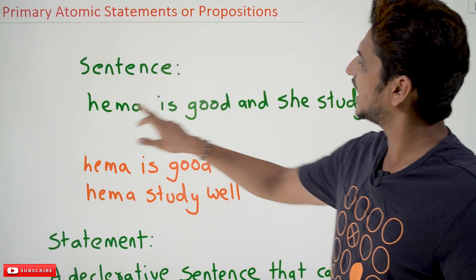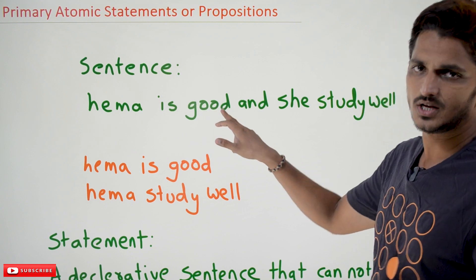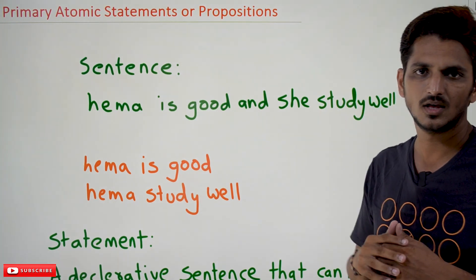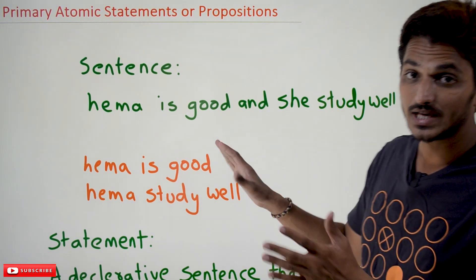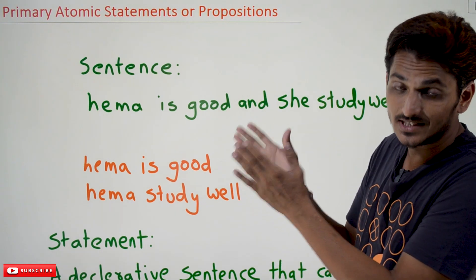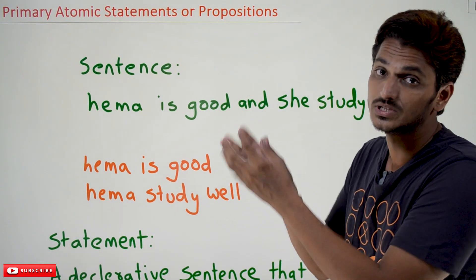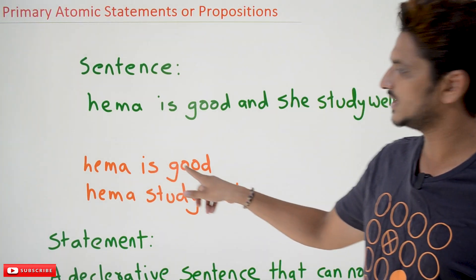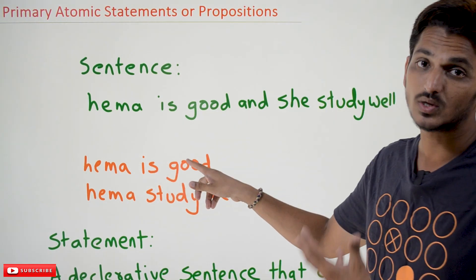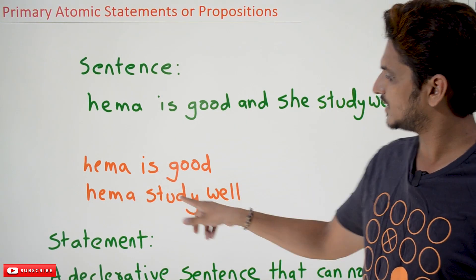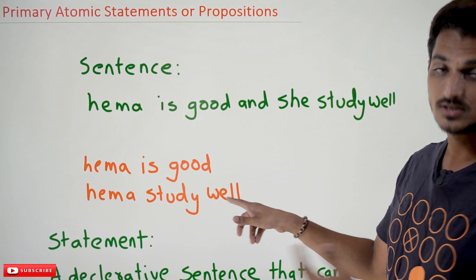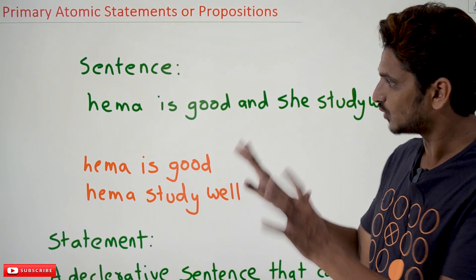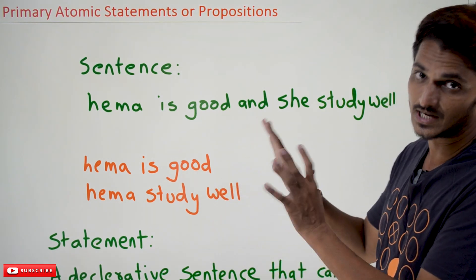Let's take a sentence: 'Hema is good and she studies well.' If you take this sentence, we can divide it into two simpler sentences. 'Hema is good' is one simpler sentence, and 'Hema studies well' is another sentence. So this is what you need to understand about a sentence.